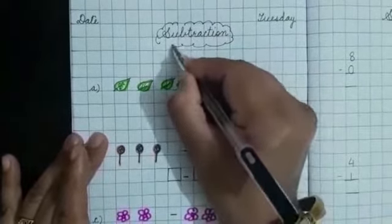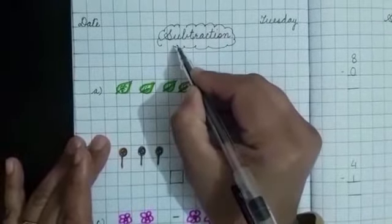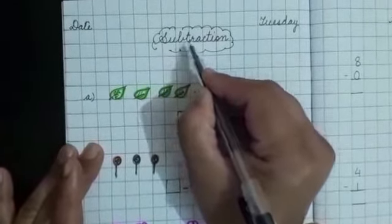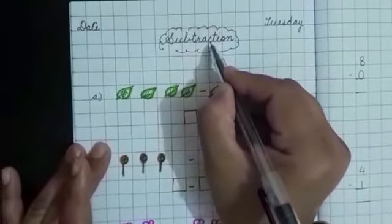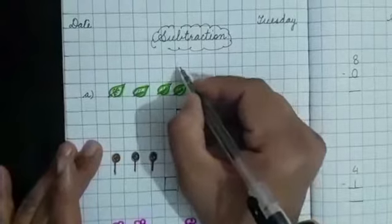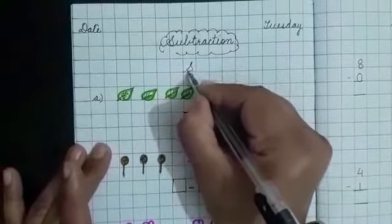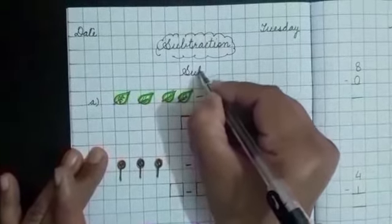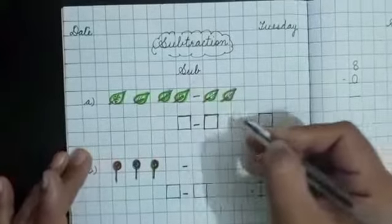Very good. Just spell along with me the spelling of subtraction. S-U-B-T-R-A-C-T-I-O-N. Subtraction. In short we are writing S-U-B. Subtraction problems.